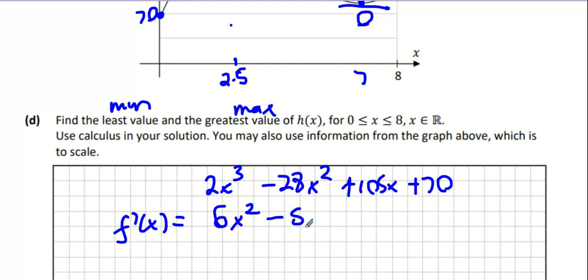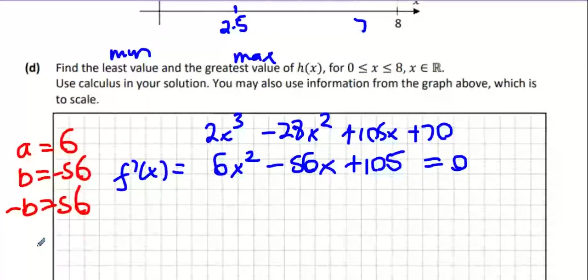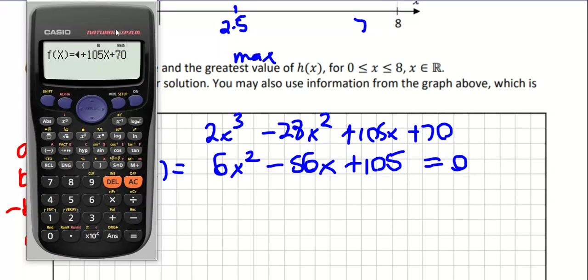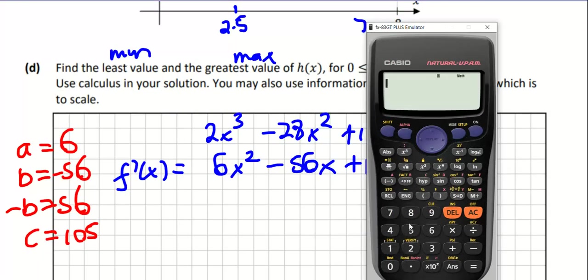And we know that this now equals 0. I'm just going to use the minus B formula here. A equals 6, B equals minus 56, minus B equals plus 56, and C equals 105. And I'm going to throw all that into the calculator. So it's going to be minus B which is 56, plus square root of minus 56 squared. Now whatever I type in the calculator you put into your page. Minus 4 times 6 times 105, all over 2A, so that's 2 times 6.